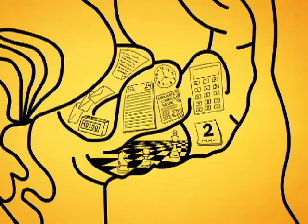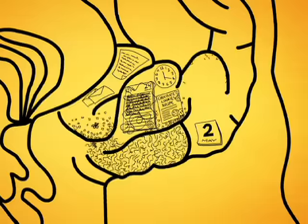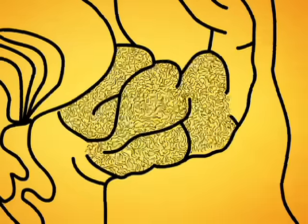Next, the disease creeps toward the front of the brain, where logical thought takes place. Very gradually, a person begins to lose the ability to solve problems, grasp concepts, and make plans.